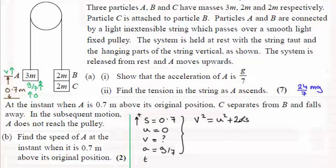And so therefore we've got V squared equals U squared. Well that's going to be 0, so I'll just leave that out. And then it's 2 times the acceleration which is g over 7, times S the displacement 0.7. And if you work this out, you're just going to get g over 5.